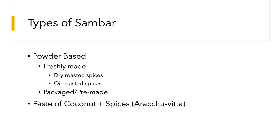The second kind of sambar involves not using a powder but using a paste of coconut and spices that have been oil-roasted — typically in ghee, sesame oil, or regionally appropriate oil. In Tamil this is called arachivitta sambar, and it has a very distinct flavor profile compared to powder-based sambar. When you oil-roast spices and then mix them with coconut, the intensity from oil roasting is muted by the creamy nuttiness of coconut, giving you a better, more well-rounded taste profile.